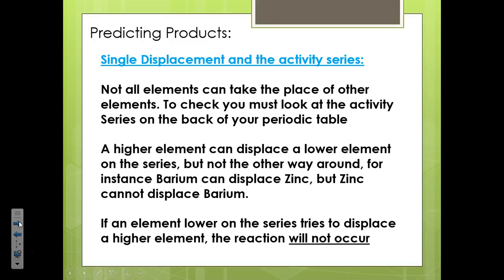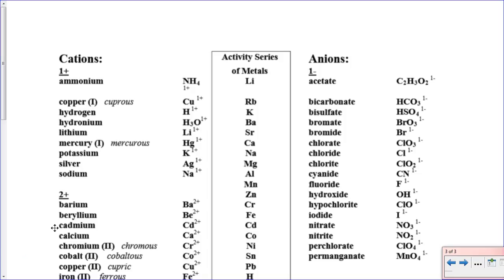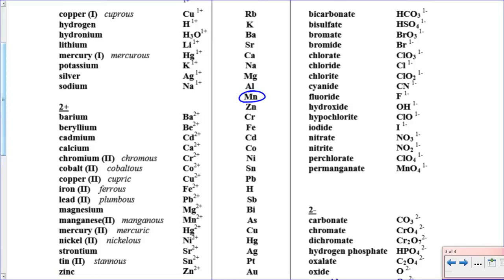The last thing I'm going to talk about here is the activity series. This comes into play with single displacement reactions. The idea is that elements aren't all completely interchangeable — some elements can't take the place of others. You look at this activity series, which is on the back of your periodic table. It's listed in terms of highest activity. Something higher on this list can displace something lower, but something lower cannot displace something higher. For instance, manganese can displace cobalt, but cobalt cannot displace manganese.